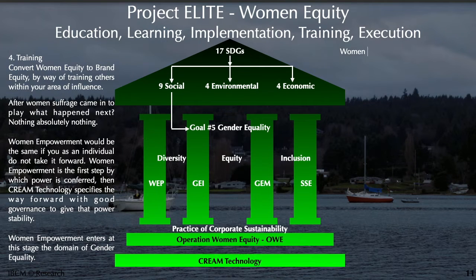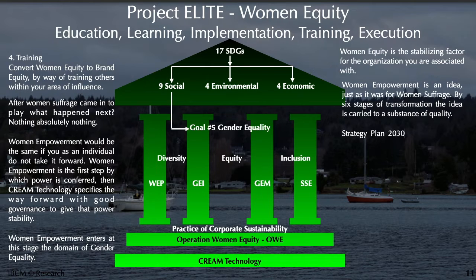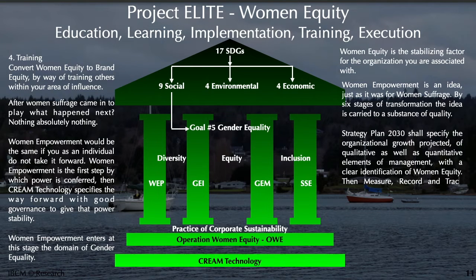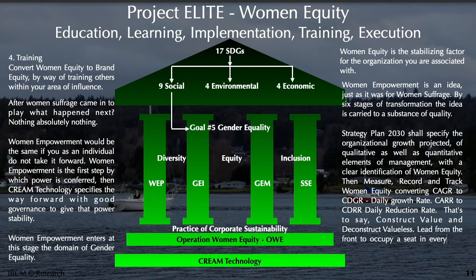Women equity is the stabilizing factor within the organization you are associated with. Women empowerment is an idea, just as it was for women's suffrage. By six stages of transformation, the idea is carried to a substance of quality. Strategy Plan 2030 shall specify the organizational growth projected in qualitative as well as quantitative elements of management, with a clear identification of women equity. Then: measure, record, and track women equity — converting CAGR to CDGR (daily growth rate) and CARR to CDRR (daily reduction rate) — construct value and deconstruct the valueless, and lead from the front to occupy a seat in every task envisioned in Strategy 2030.